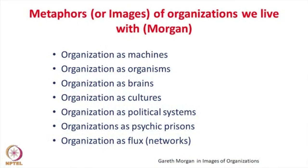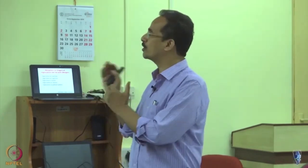Gareth Morgan, in his famous book 'Images of Organization,' talks about organization as machines; organization as organism; organizations as brain, because an organization is a system which constantly creates and processes information from within and without; organization as cultures — culture is shared values, beliefs, rituals, norms, and heroes reflected in certain artifacts. Organizations can also be understood as a political system, with powerful and less powerful groups, their struggles and the nature of their interaction.